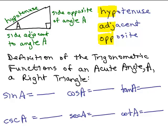If we look at angle A, the horizontal line here is called the side adjacent to angle A. We'll use ADJ to stand for the side adjacent to angle A — specifically the leg of the right triangle adjacent to angle A. The other leg, opposite angle A, is OPP for opposite. The longest side we call the hypotenuse; we won't call that adjacent or opposite.